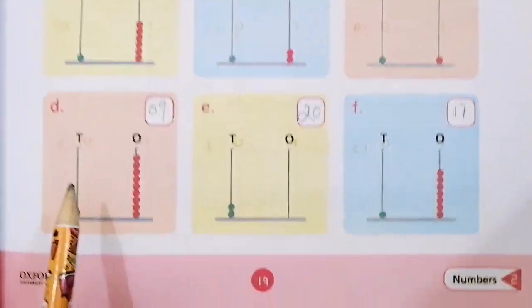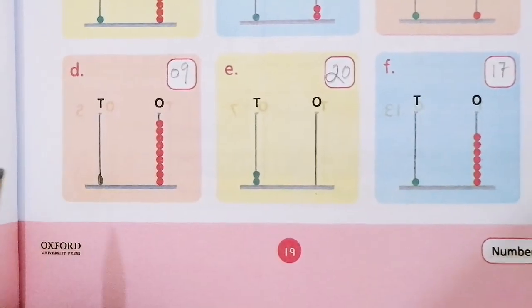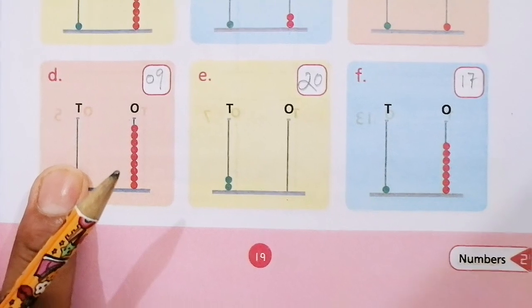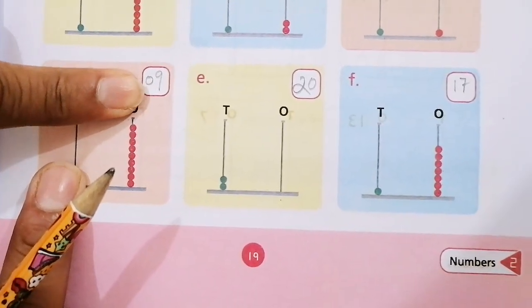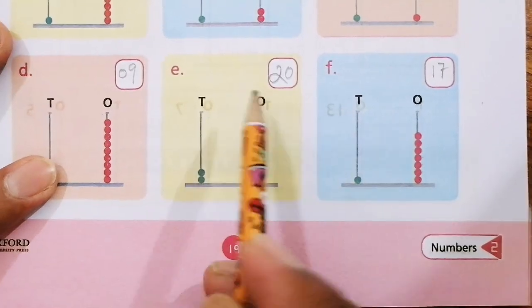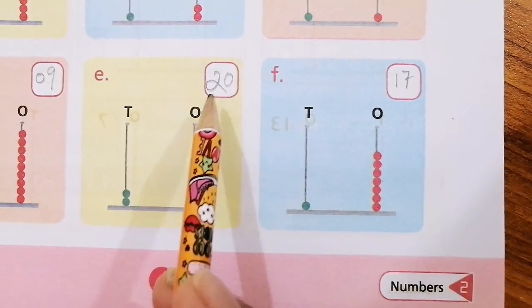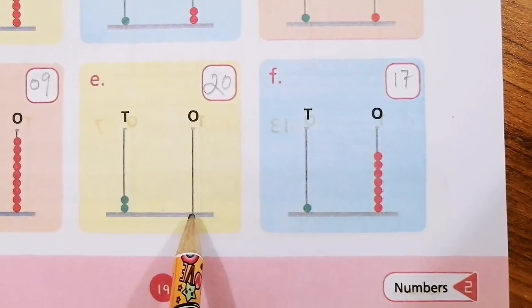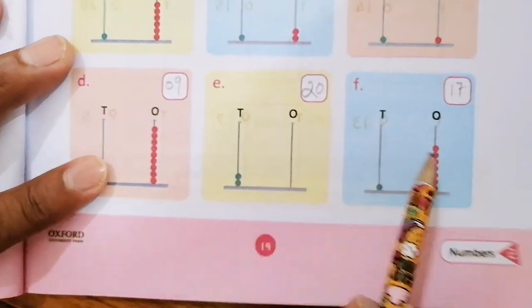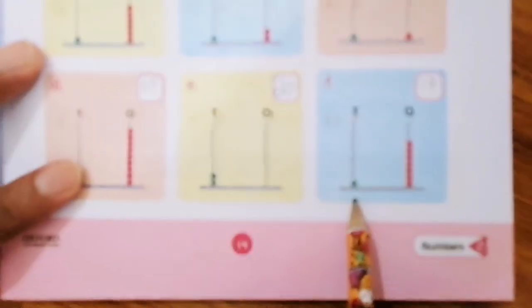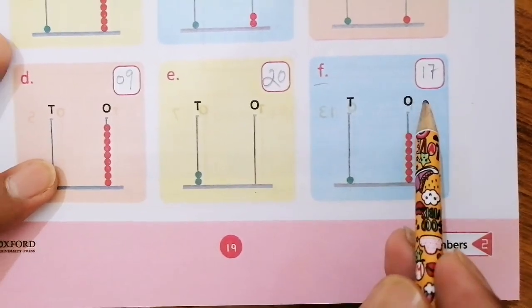On the C part we have one bead on the tens place and one bead on the ones place. So in the end we have 11. In D part, one bead on the tens place and no beads on the ones place, so we write ten. In E part, there are no beads on the tens place and 9 beads on the ones place. We write 0 and 9. In F part, there are 10 beads on the tens place and 7 beads on the ones place, we write 17.